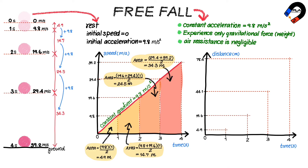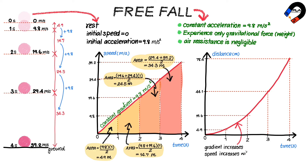We draw a best-fit curve. The distance-time graph shows that the gradient is increasing, which indicates that the speed is also increasing with constant acceleration of 9.8 meters per second squared.